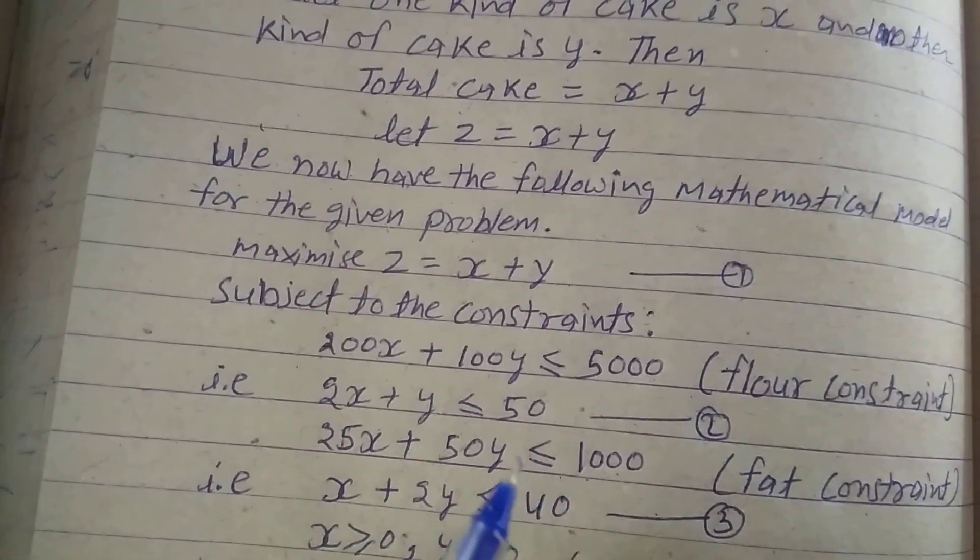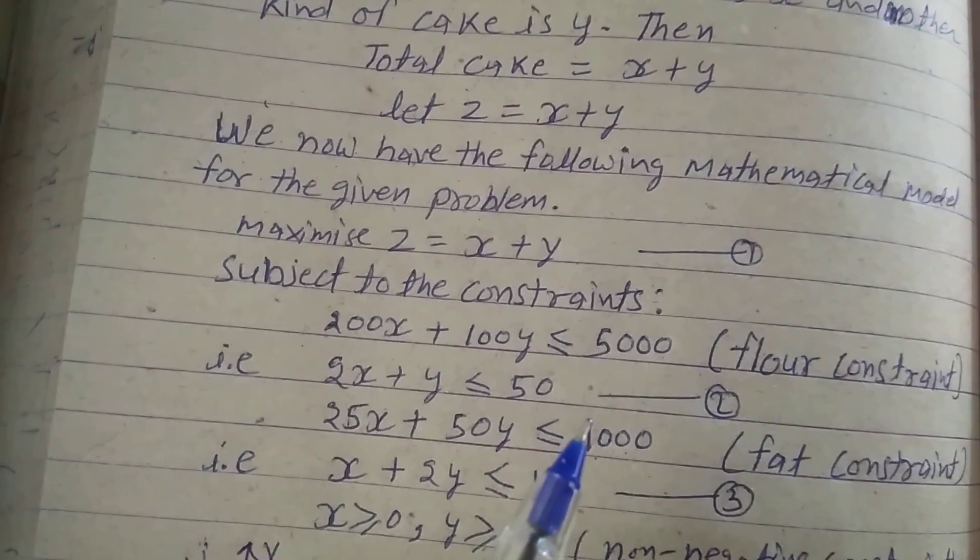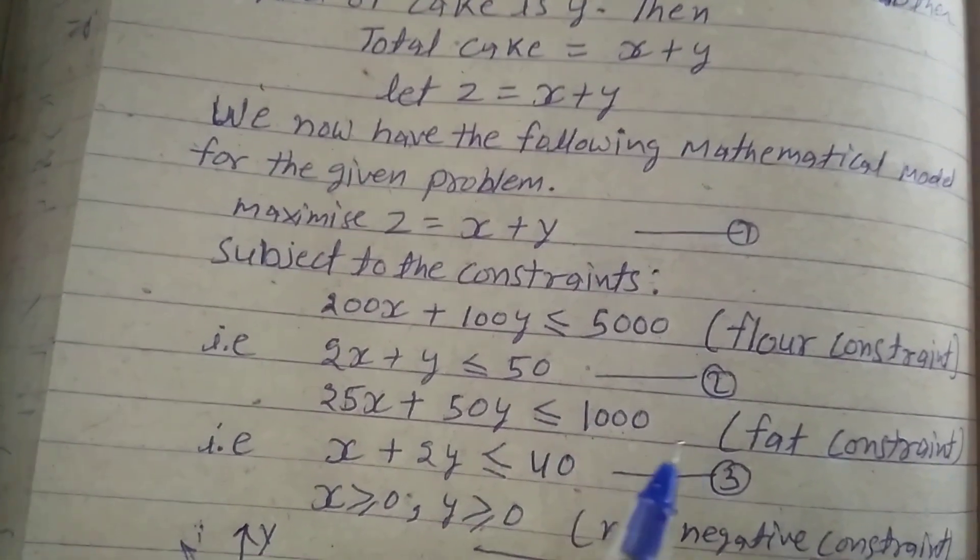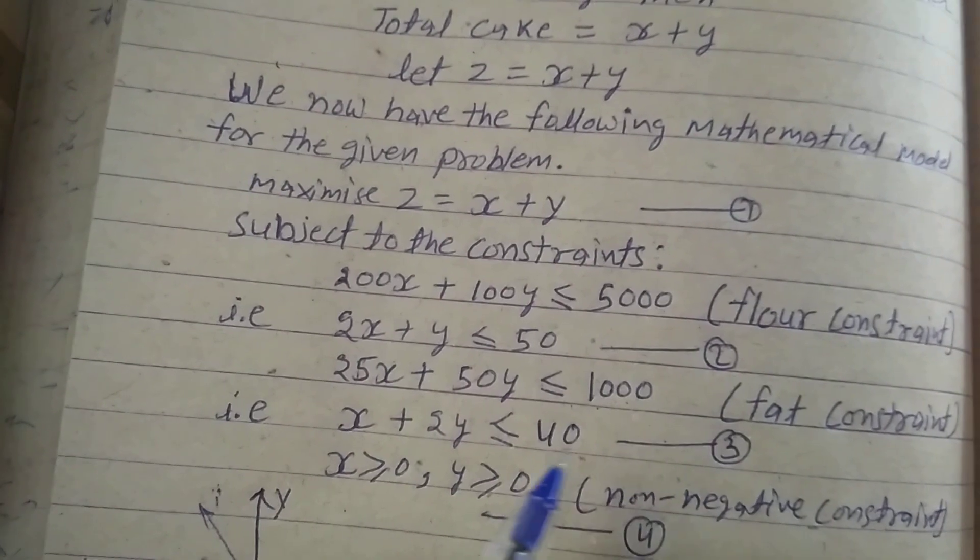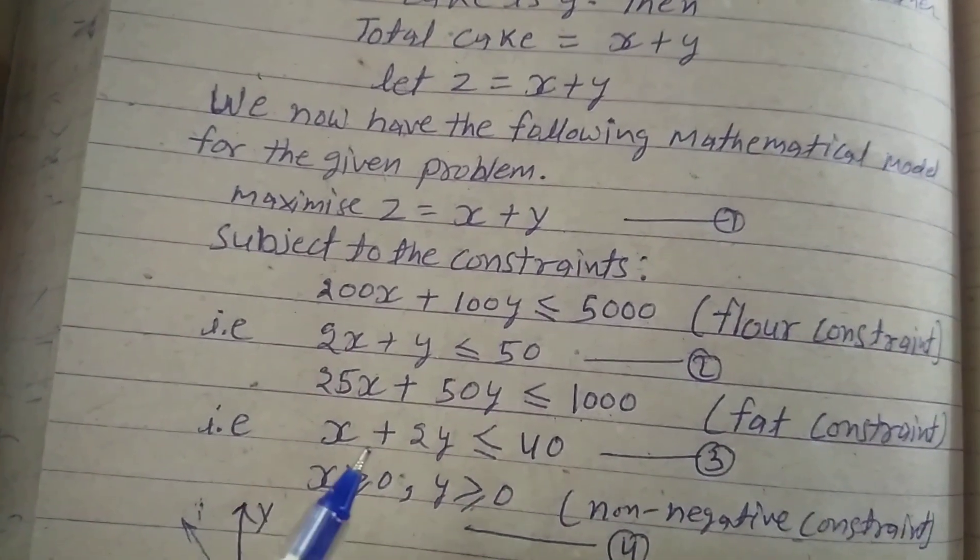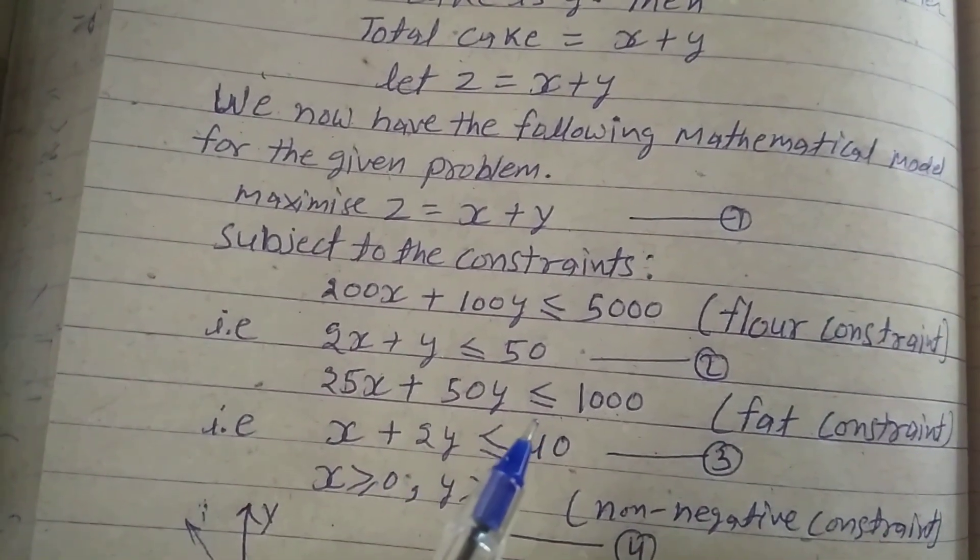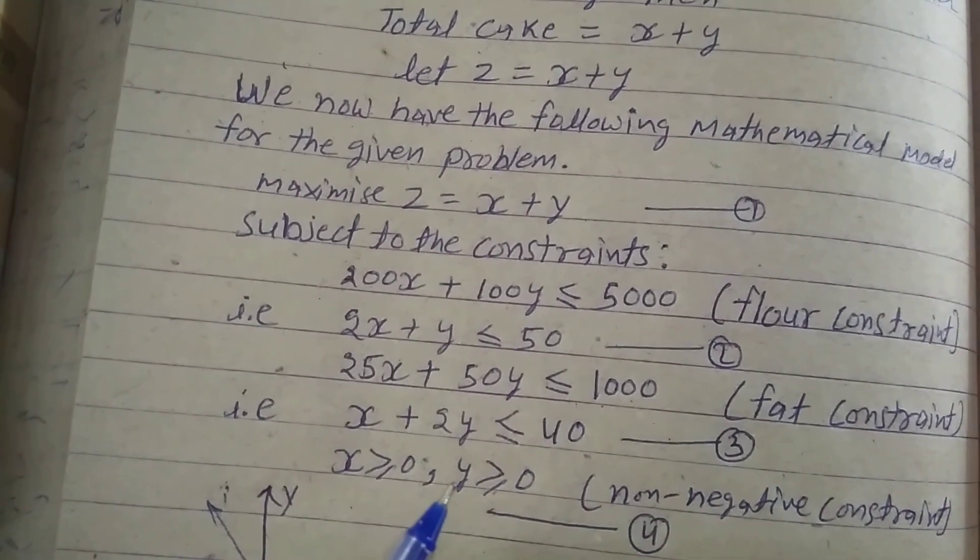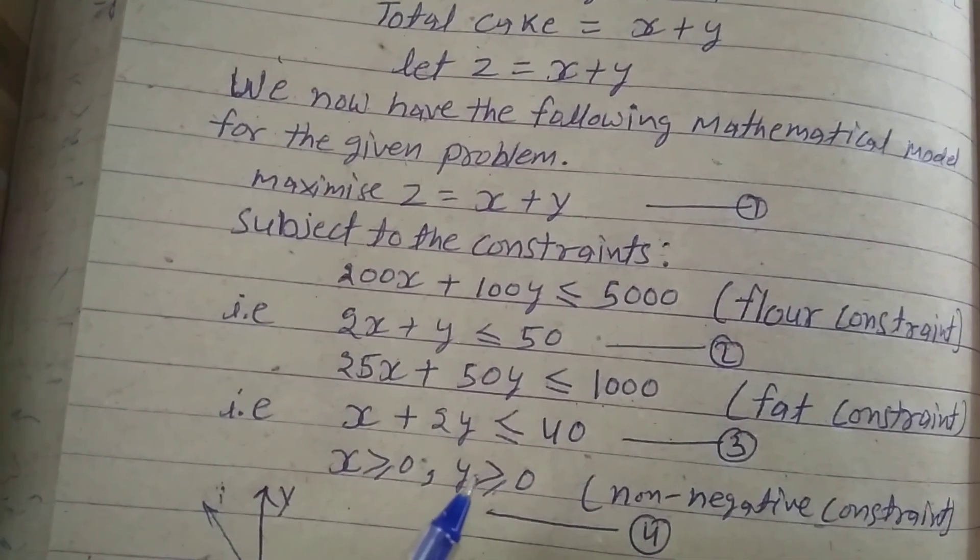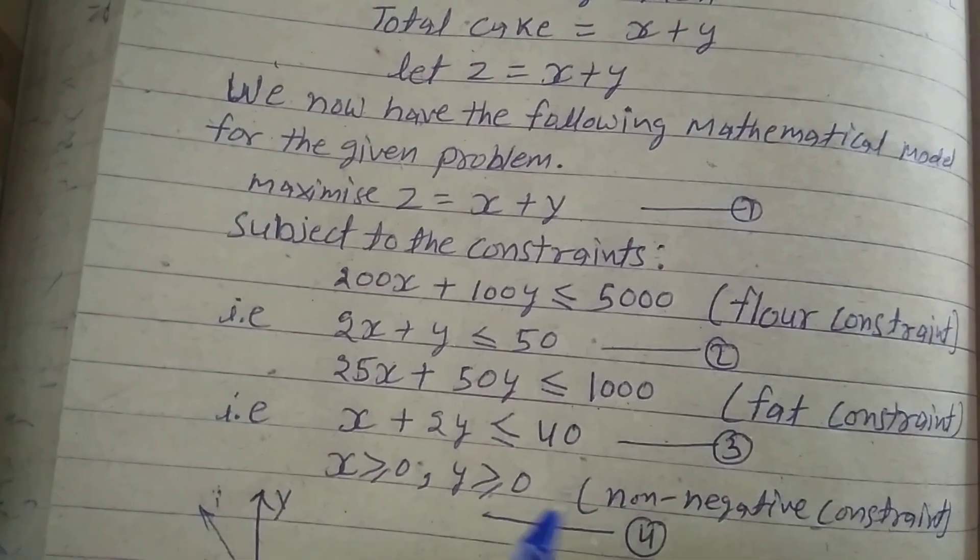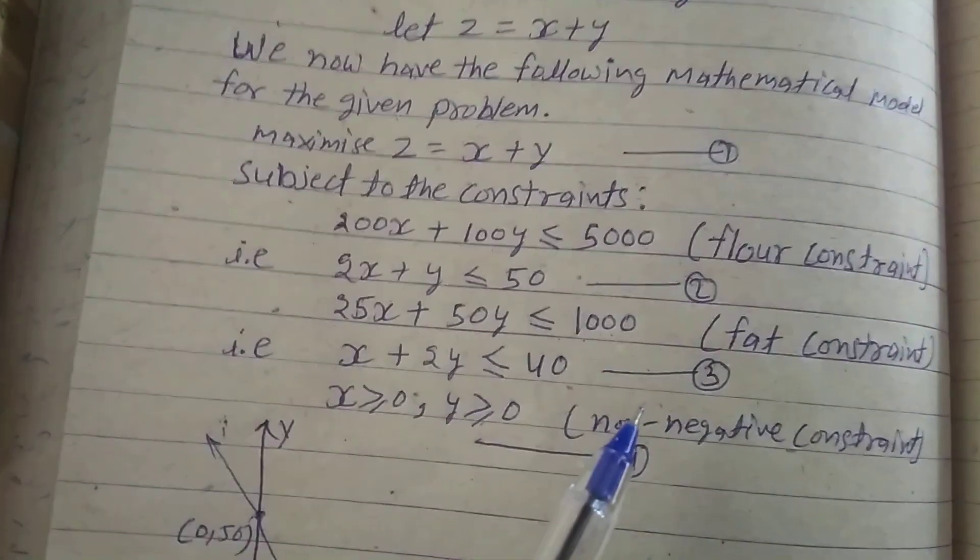25x plus 50y is less than or equal to 1000, fat constraint. That is x plus 2y is less than or equal to 40, equation 3. X is greater than or equal to 0, y is greater than or equal to 0, non-negative constraints.